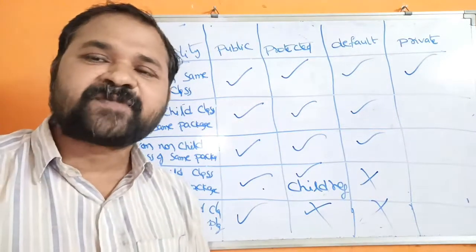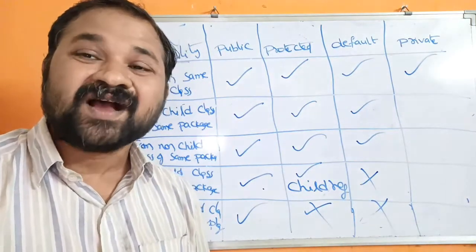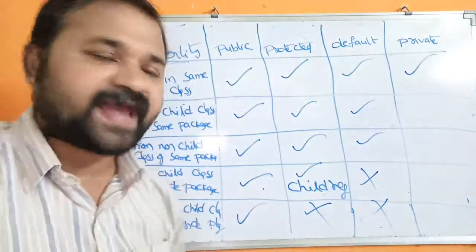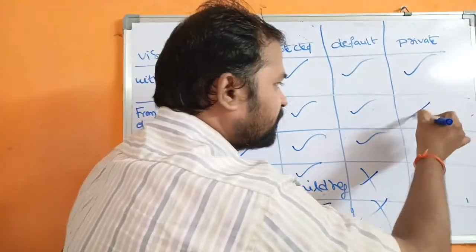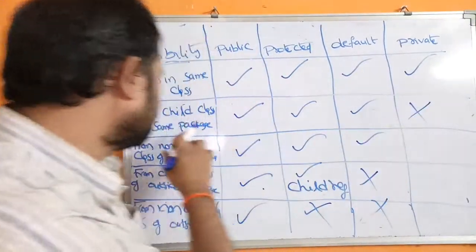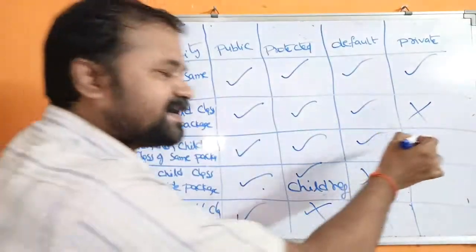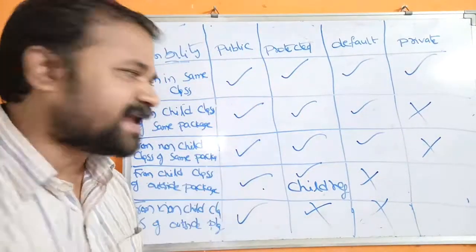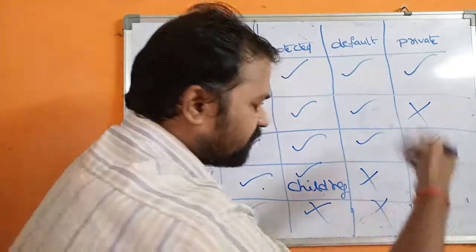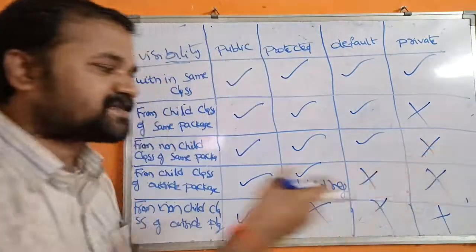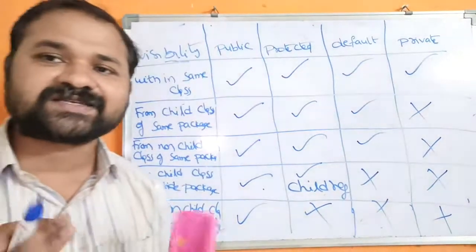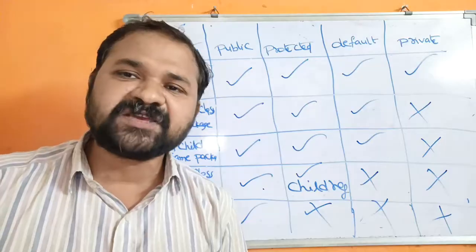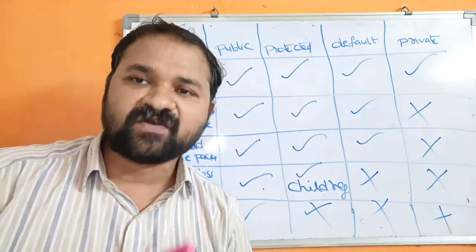We can't access private members from outside the class, from another program, from child or non-child classes of the same package, or from another package at all. This is about access specifiers or modifiers in Java programming.